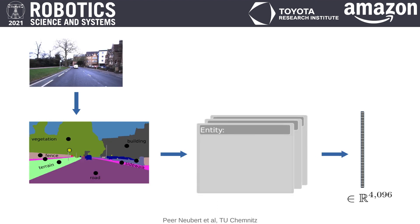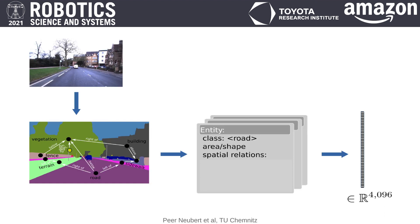For each of these entities, we compute a set of basic properties: the class label, area, shape, and location — and very importantly, spatial relations. For example, that the road entity is right of terrain and left of sidewalk. This is a key contribution to the descriptive power of our approach.